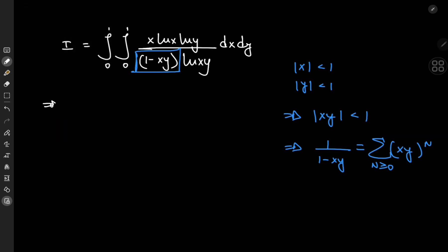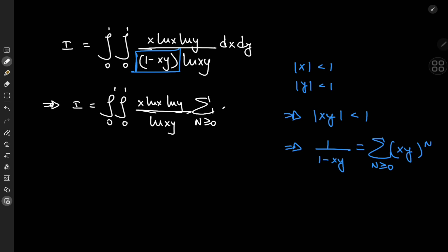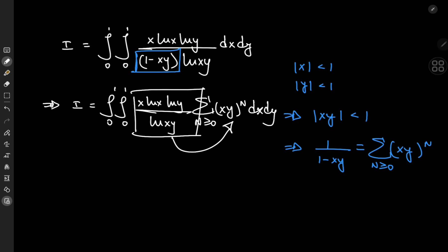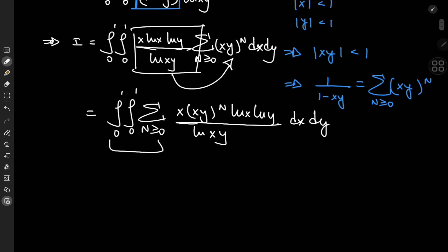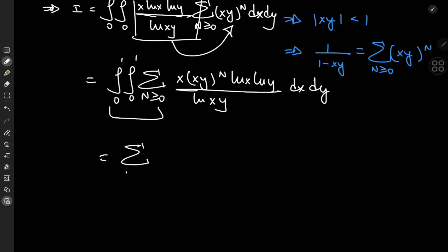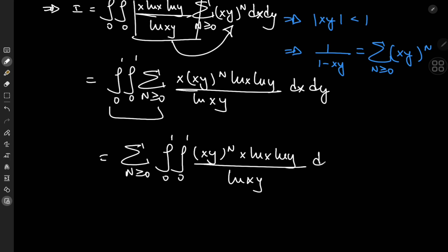So we can write the integral I as the double integral from 0 to 1 of x log x log y divided by log xy, times the sum over n of (xy)^n, dx dy. Next we switch the order of integration and summation to get a sum of integrals: the sum over n of the integrals from 0 to 1 of (xy)^n times x times log x log y divided by log xy, dx dy.